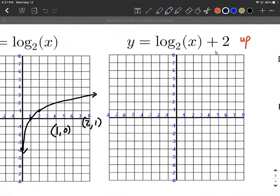So again, the vertical asymptote does not move. It's still at the y axis, but our key points have moved. So we have a key point at 1,0 that's going to move up 2 units. So it's going to be at 1,2.